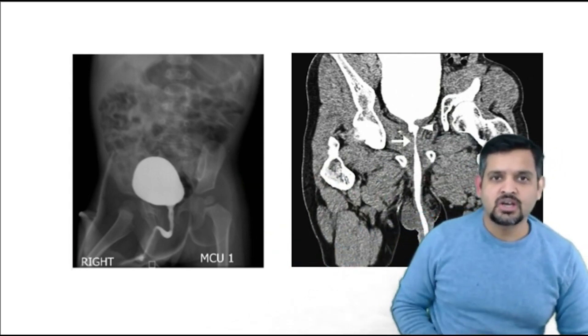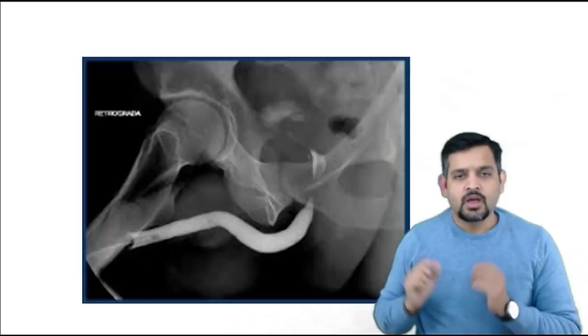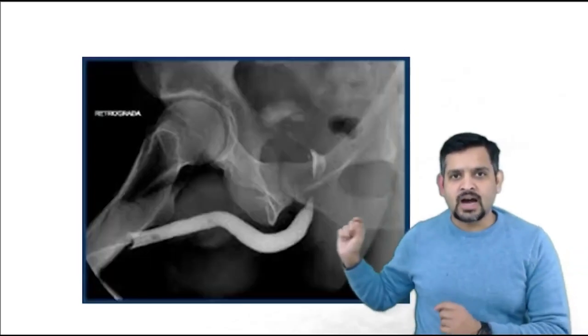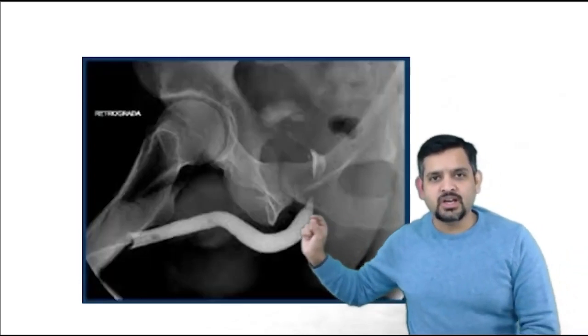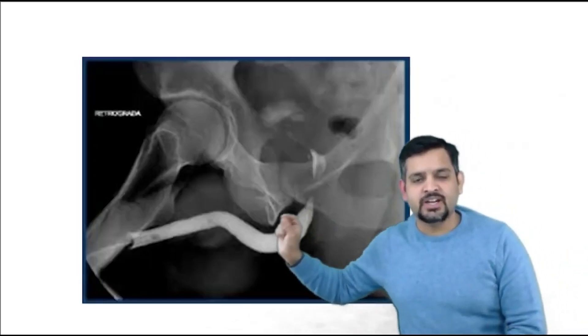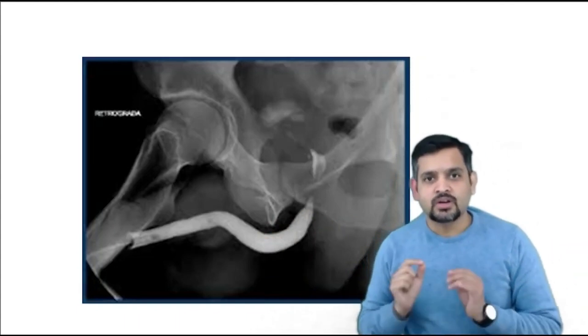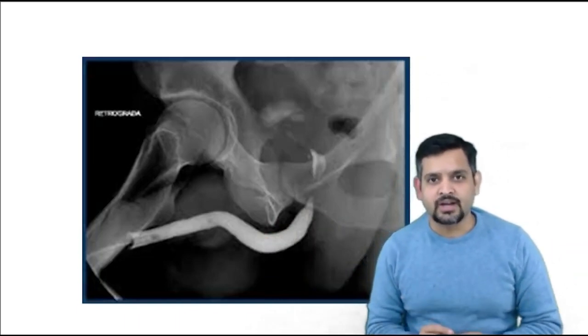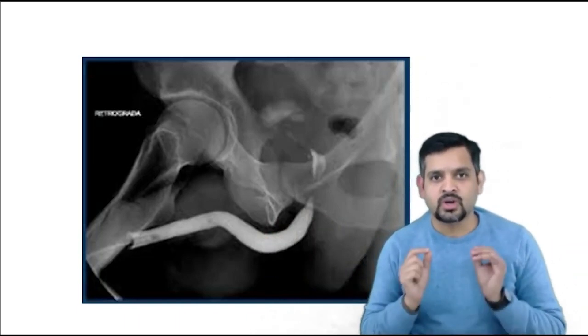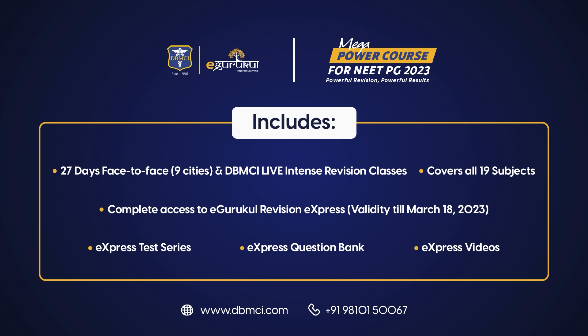If you see the dye majorly into the anterior urethra, you are dealing with a case of retrograde urethrography.